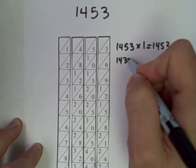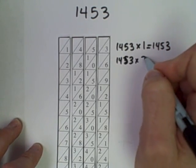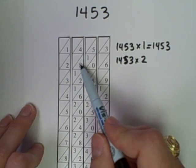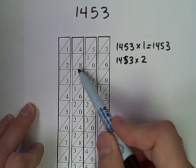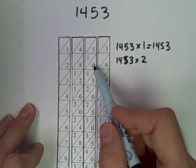1,453 times 2 is 2,906 - the 8 plus the 1 and 6.